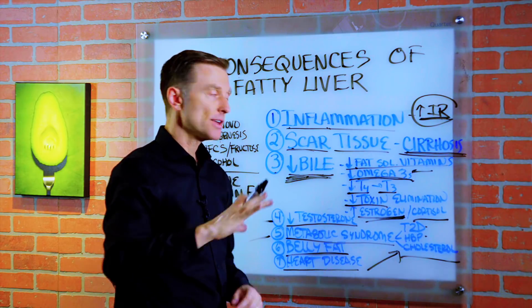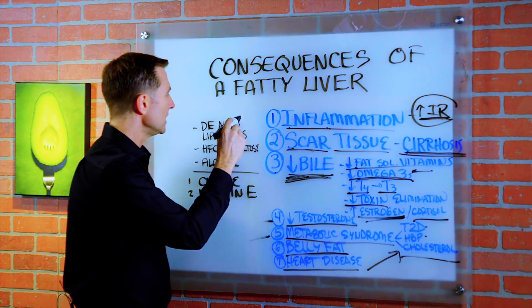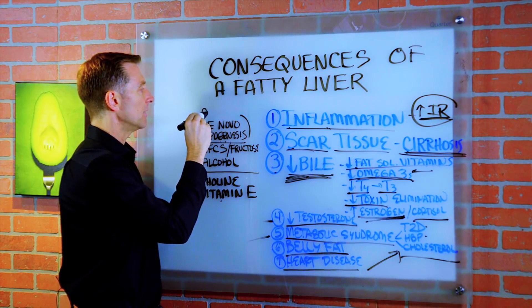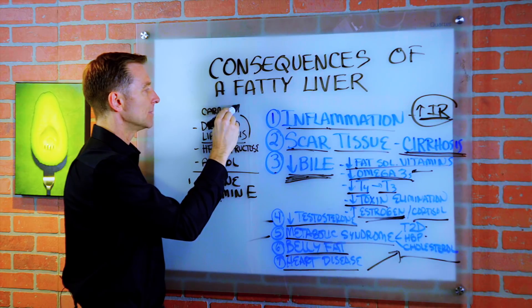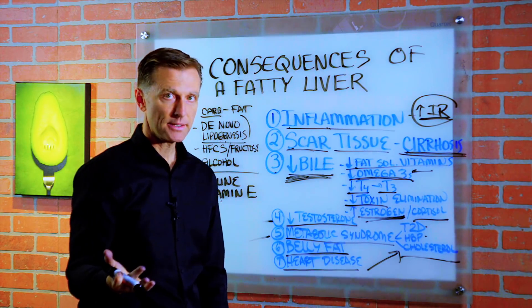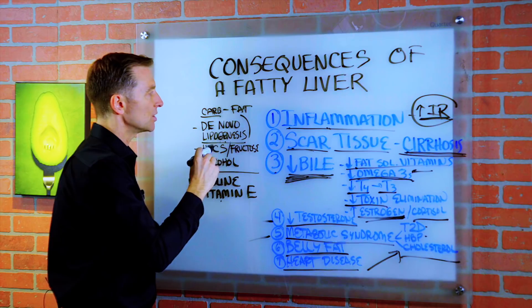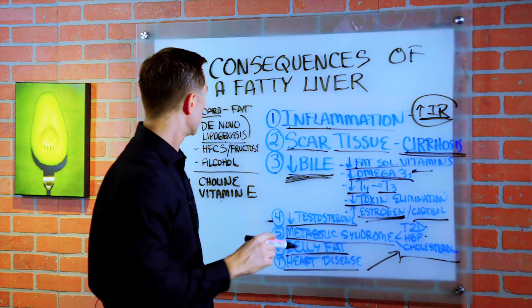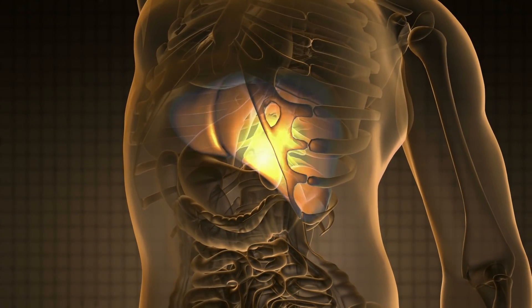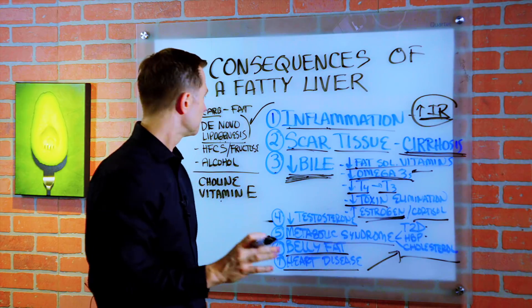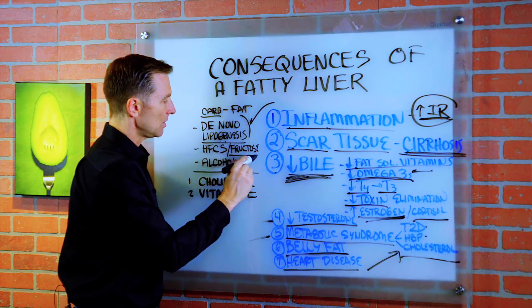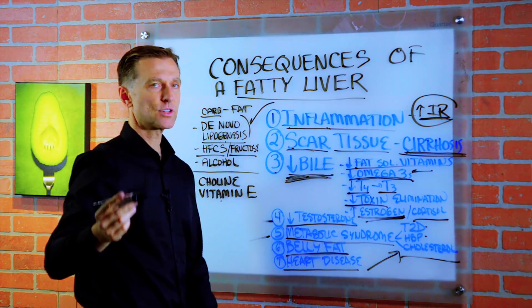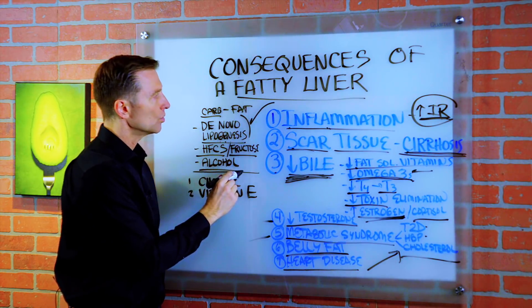There are three big things that cause a fatty liver. One is called de novo lipogenesis — basically the conversion of carbs to fat in your body. When you do a high-carb diet, you start generating a lot of fat that deposits in your liver. People with a fatty liver need to be on a low-carbohydrate diet. Also, fructose — high fructose corn syrup and corn syrup — will create a fatty liver faster than any type of sugar. Alcohol will do it as well.